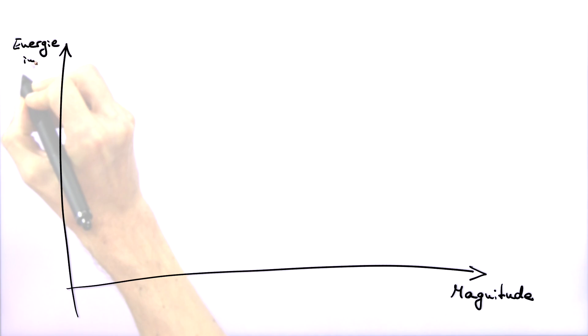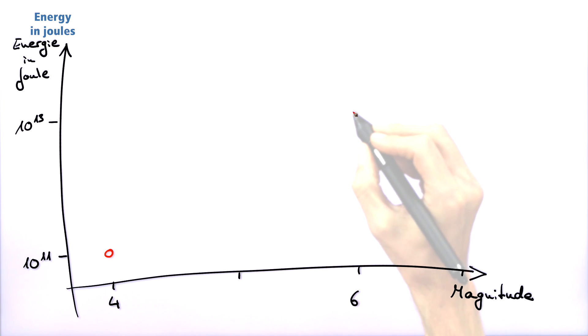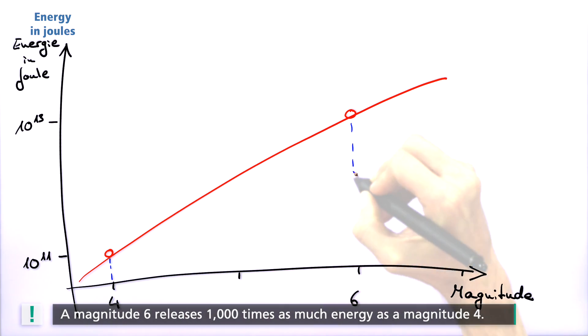Today, the strength of earthquakes is calculated using modern global magnitude scales. However, the name has remained. A larger magnitude means that the seismic waves radiate more energy, and it is described using a logarithmic scale. This means that a magnitude 6 earthquake releases around 1,000 times as much energy as a magnitude 4 quake.